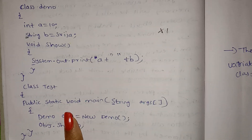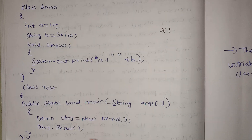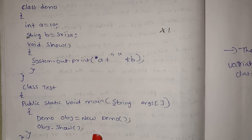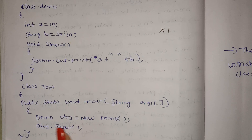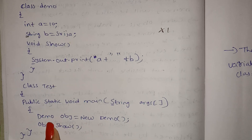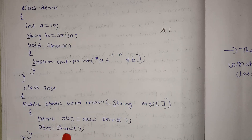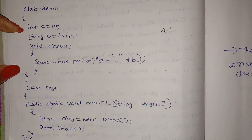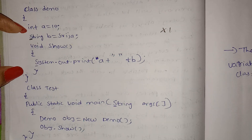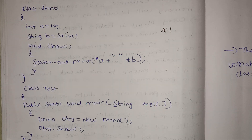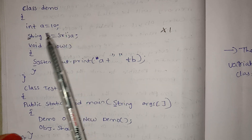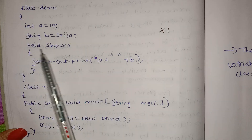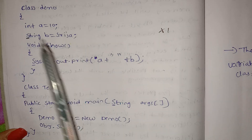We are going to choose the main method. Now, we are going to choose the class demo. Int A is equal to 10. String B is equal to Sreeja.